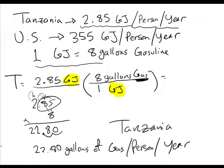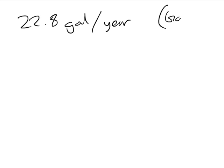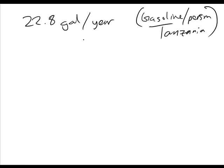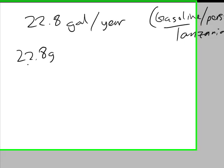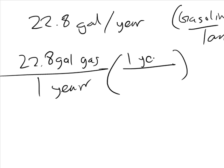Now to convert that to months, if we know that it's 22.8 gallons per year of gasoline per person in Tanzania, we know that there are 12 months in a year. So if we wanted to go 22.8 gallons of gas in one year, and we want to convert this, we would want to convert it to months. So one year would have to be on the top, 12 months would have to be on the bottom.